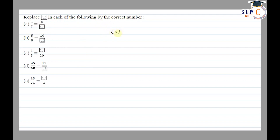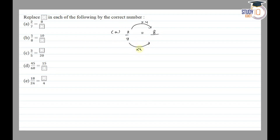Part A: 2/7 = 8/☐. We look at the numerator relationship — the numerator is multiplied by 4, since 2 × 4 = 8. To get an equivalent fraction, we multiply the denominator by the same number: 7 × 4 = 28. So the answer is 28.